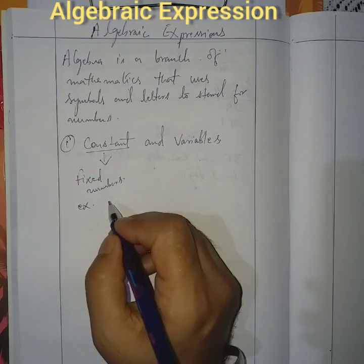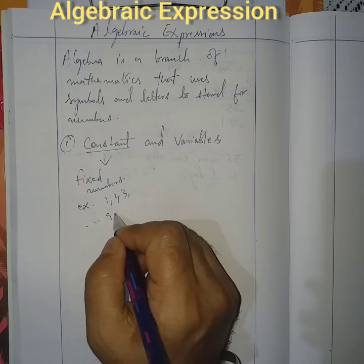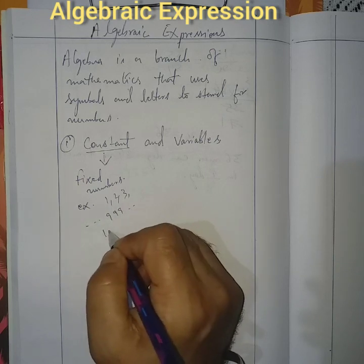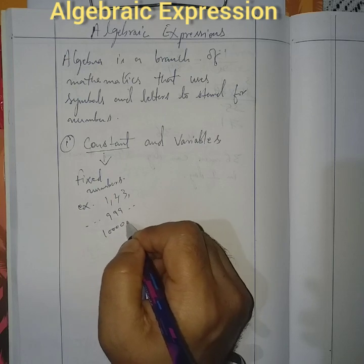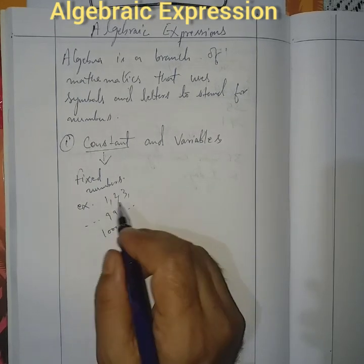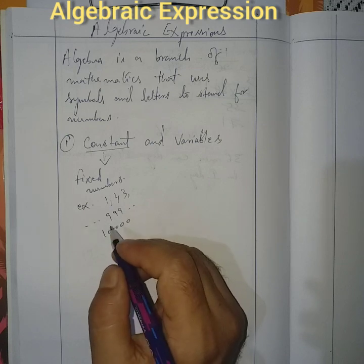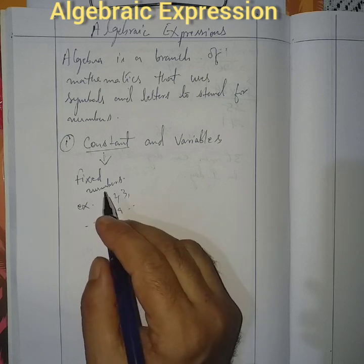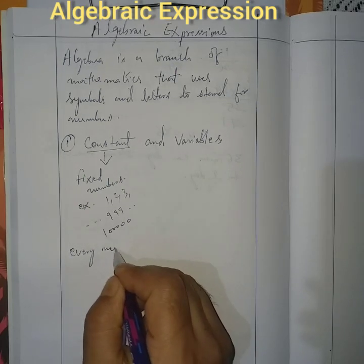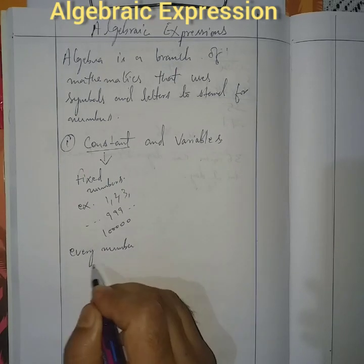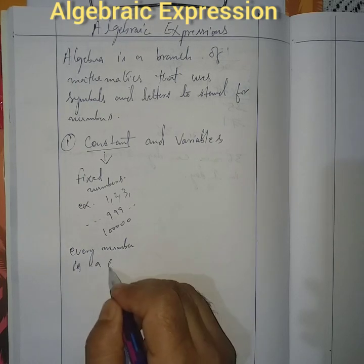For example, 1, 2, 3, 999, 1 lakh — these are all fixed numbers. Every number is a constant.